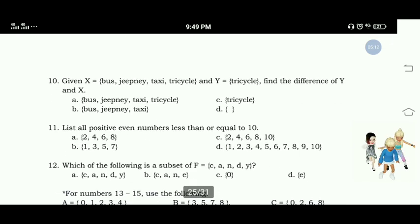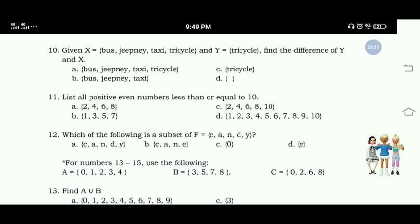Number 10: Given set X equals elements bus, jeepney, taxi, tricycle, and set Y equals element tricycle, find the difference of Y and X. We are going to find the difference. The correct answer for number 10 is Letter B. The tricycle will be eliminated, leaving bus, jeepney, and taxi.